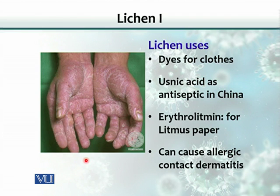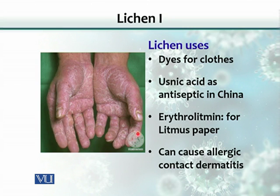Their uses include dyes for clothes. They are also used as an antiseptic — in ancient China they were and still are used for this purpose. The litmus paper we use for checking pH is also prepared from a compound released by lichens. Some lichens can also cause contact dermatitis, though that is not a use.